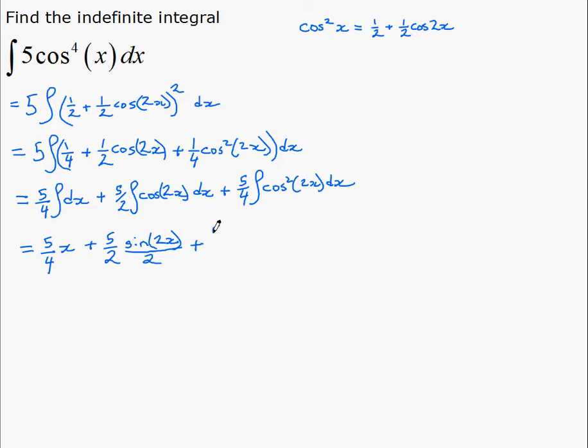So that's plus 5 over 4. And for this one, we're going to have to use this substitution again. So that's 1 half plus 1 half cosine. Now this is the rule for x giving 2x. We already have 2x, so that's going to give us 4x here.